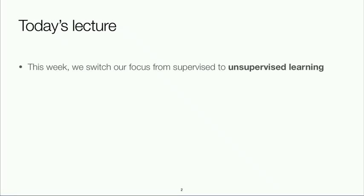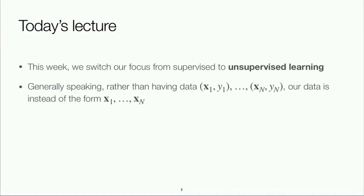Today's lecture — actually this whole week — will see a switch in focus from supervised learning, which is basically everything we've done so far, to unsupervised learning. The easiest way to characterize unsupervised learning is a change to the assumptions about what we're given. We've always assumed access to data in the form of input-output pairs x_i, y_i, and the goal was to build a model that predicts y from x and generalizes to new examples.